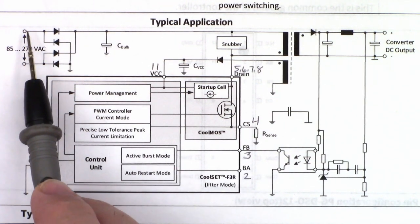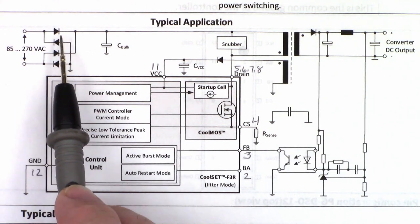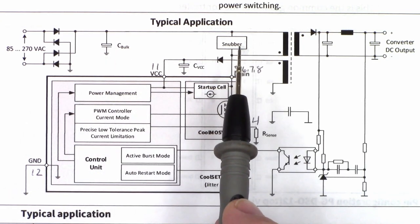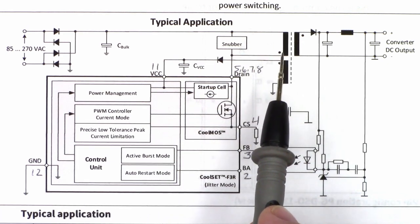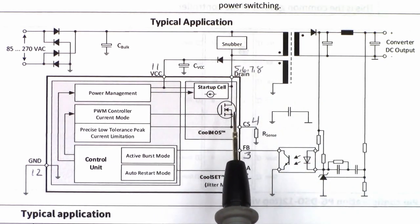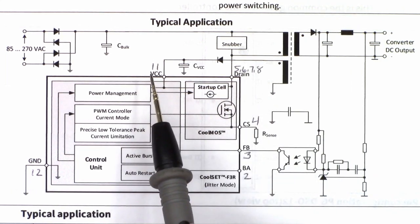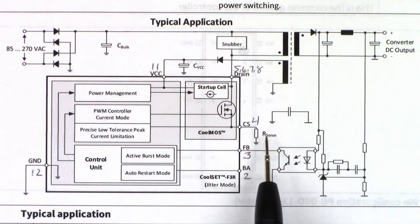We've got the AC input, 85 to 270 volts, through a full-wave bridge rectifier and a filter capacitor. There is a snubber network, and we feed that into the transformer. Out of the transformer, it goes into the main power supply controller FET. I've noted the pin numbers on here for easy reference.